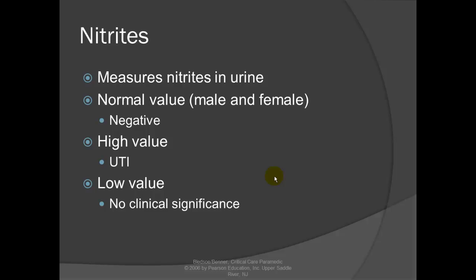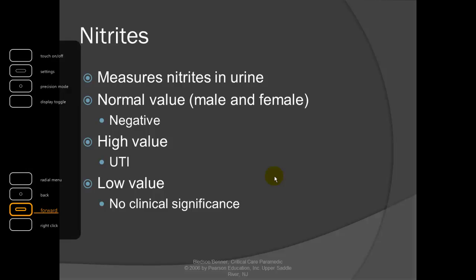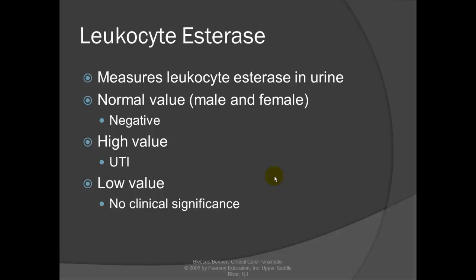Nitrites: measures nitrites in the urine. Normal value is negative. A high value is suggestive of a urinary tract infection. Low values have no clinical significance. Leukocyte esterase — white blood cells: measures leukocyte esterase in the urine, detectable via dip strip or automated analyzer. Normal values are negative. High values suggest the presence of leukocytes in the urine and indicate a UTI. Low value has no clinical significance.